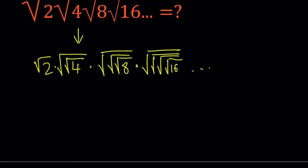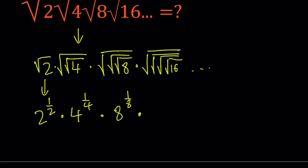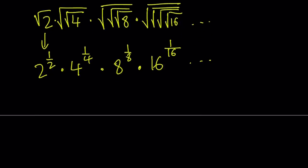The first term can be written as 2 to the power 1/2, which is the square root of 2. The second one — the square root of the square root of something — is something to the power 1/2 to the power 1/2, which becomes something to the power 1/4. So we write this as 4 to the power 1/4, then 8 to the power 1/8, then 16 to the power 1/16, and it continues. We have a power of 2 in the base and the exponent is its reciprocal.